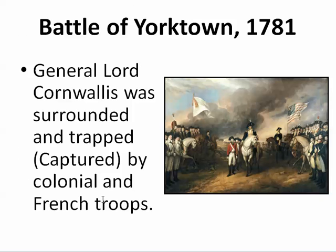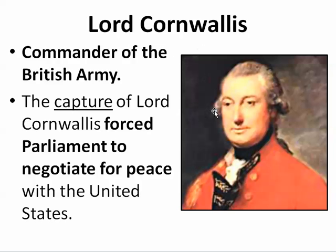At the Battle of Yorktown in 1781, General Lord Charles Earl Cornwallis is going to be surrounded and trapped or captured by George Washington's colonial forces with the help of the French forces. Lord Cornwallis was the commander or general for the British army, and his capture is very significant at the Battle of Yorktown. His capture is going to force Parliament and King George III to negotiate a peace with the United States, and that peace is going to be the Treaty of Paris 1783.